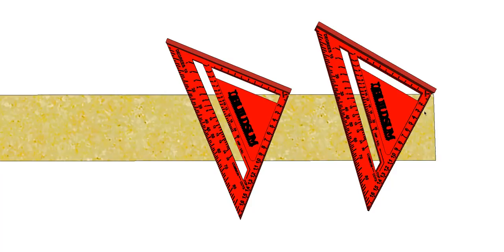That gives you your plumb cut common rafter, and if you line up the seven on the other side of the square, on this scale, that will give you the plumb cut for your hip and valley rafter.